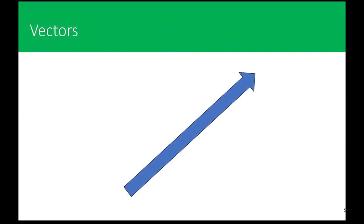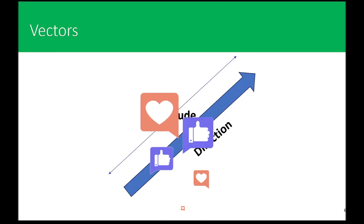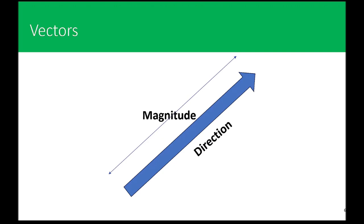Let us first understand tensors without any mathematical symbols and equations. The best route to understanding tensors is to begin by making sure you are solid on your understanding of vectors. If you have taken any college-level physics or engineering, you probably think of a vector as an arrow representing a quantity that has both magnitude and direction, where the length of the arrow is proportional to the magnitude and the orientation tells you the direction.